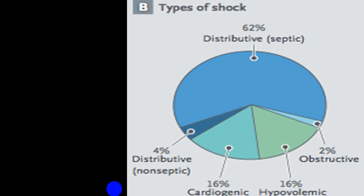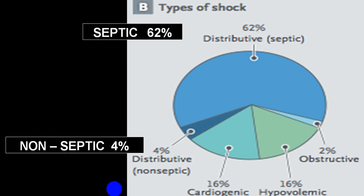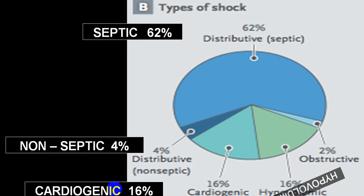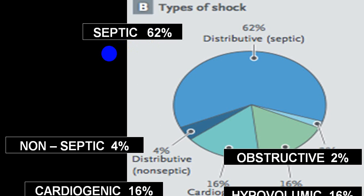More than 60% of shock cases are because of septic shock; non-septic distributive is 4%; cardiogenic is 16%; hypovolemic is 16%; obstructive is only 2%. The three most common are septic, cardiogenic, and hypovolemic — combined almost 95% of cases. Always rule out those three groups first. In septic shock, lung infection accounts for 35%, UTI 25%, gut infection 11%, and skin infection 10–11%.